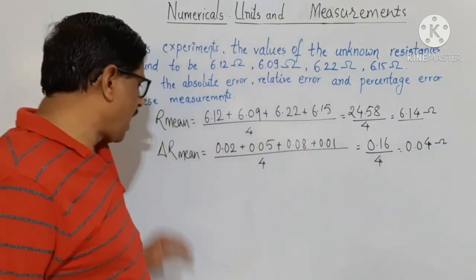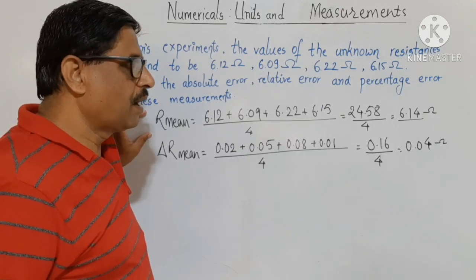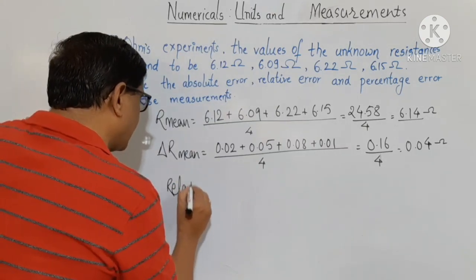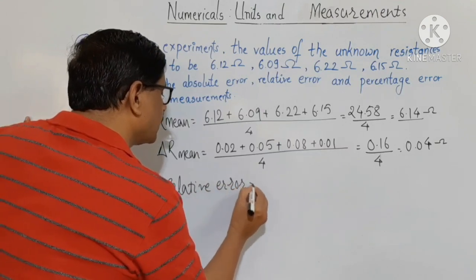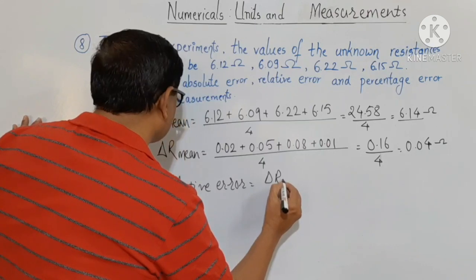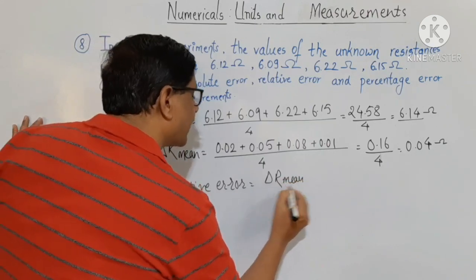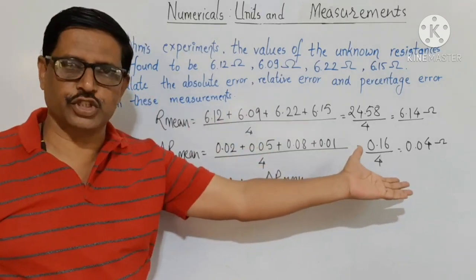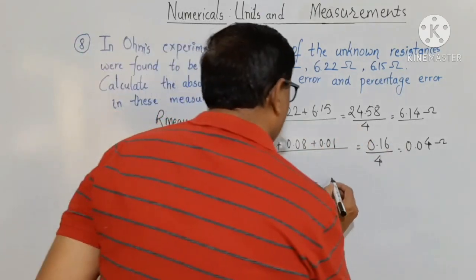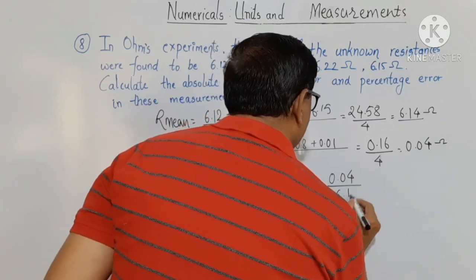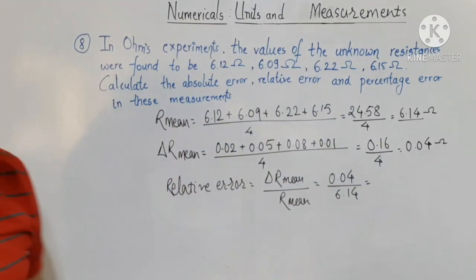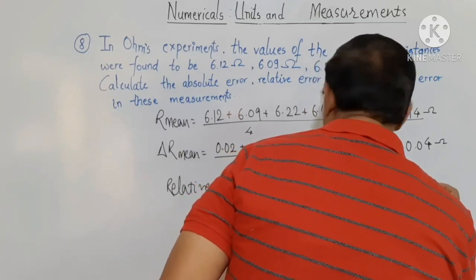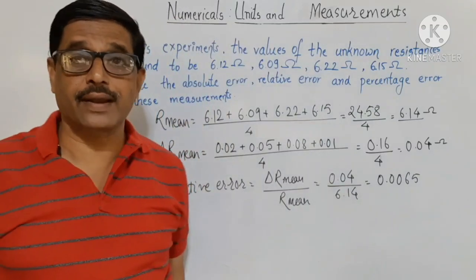With the average absolute error and average value, we can find the relative error. Relative error equals average absolute error divided by average value of resistance, which is 0.04 divided by 6.14, coming out to be equal to 0.0065, approximately 0.0065.